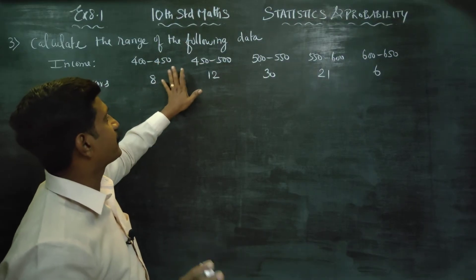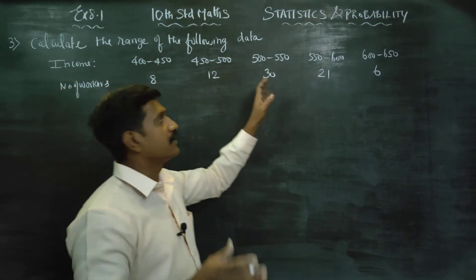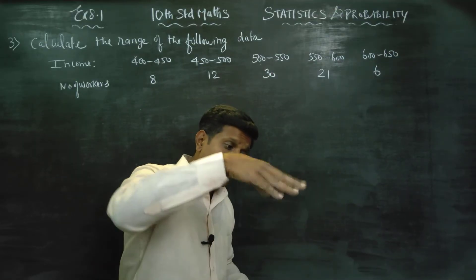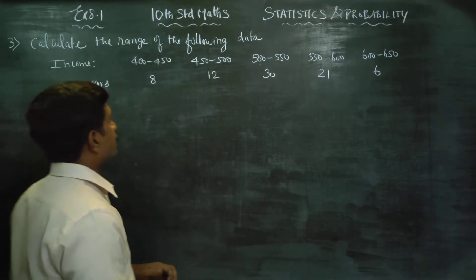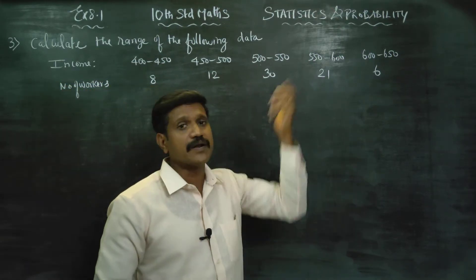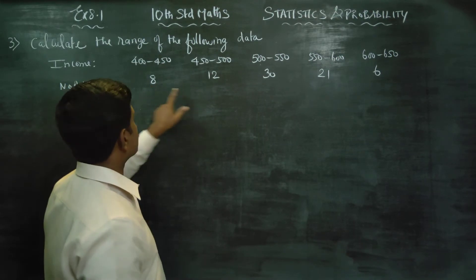400 income, 450 income, 500 income, 550 income, that much we know. But exactly how much each person earns we don't know. Therefore it is grouped data. In this manner it is called raw data. In this manner it is called frequency.